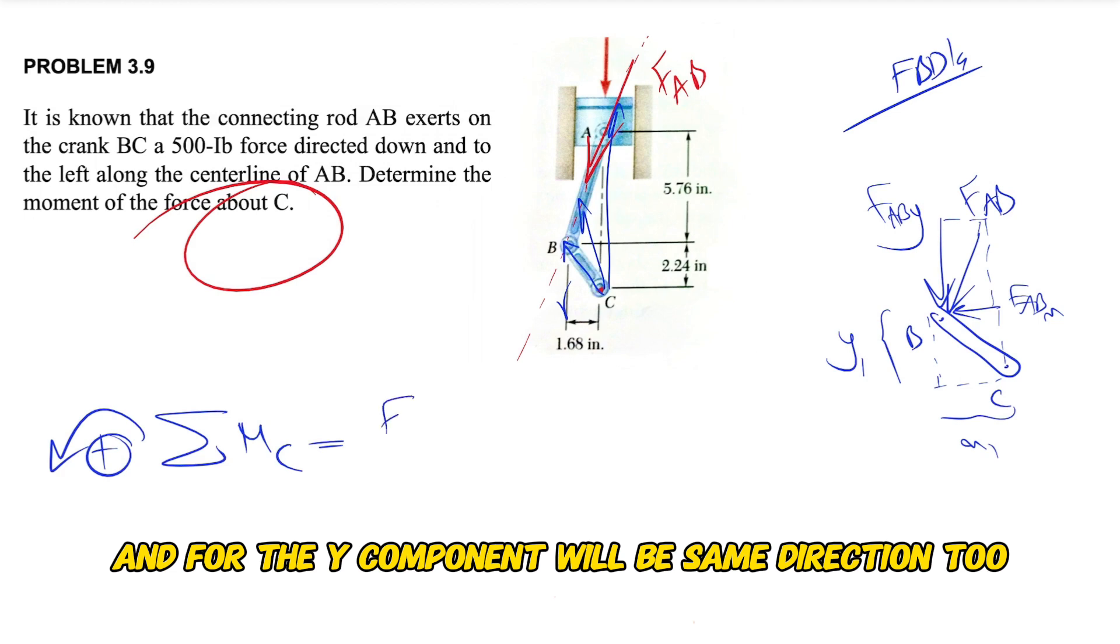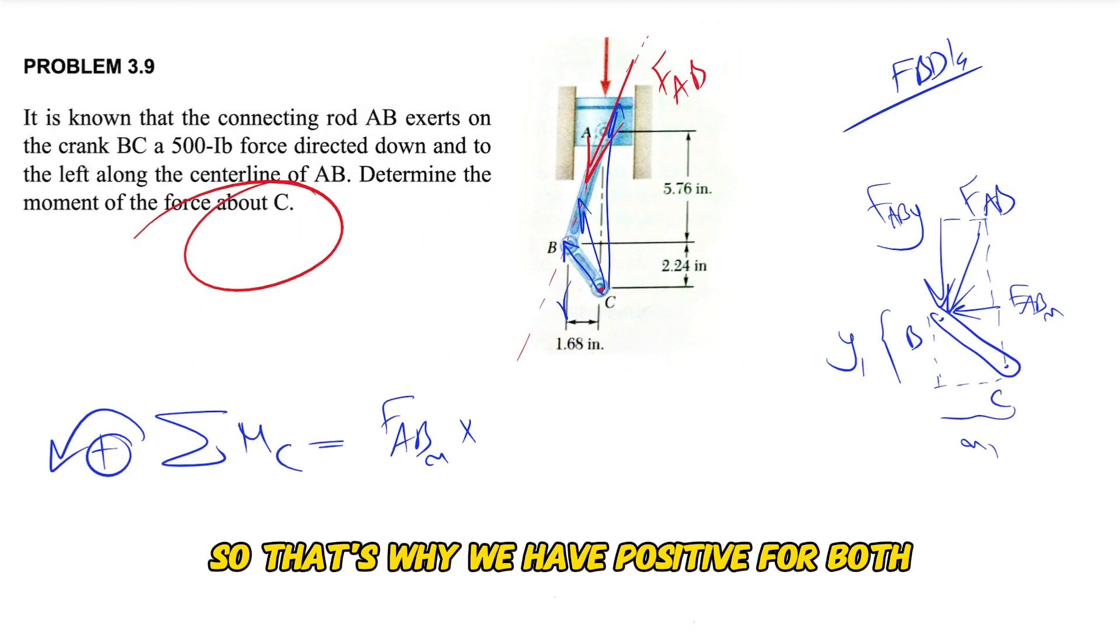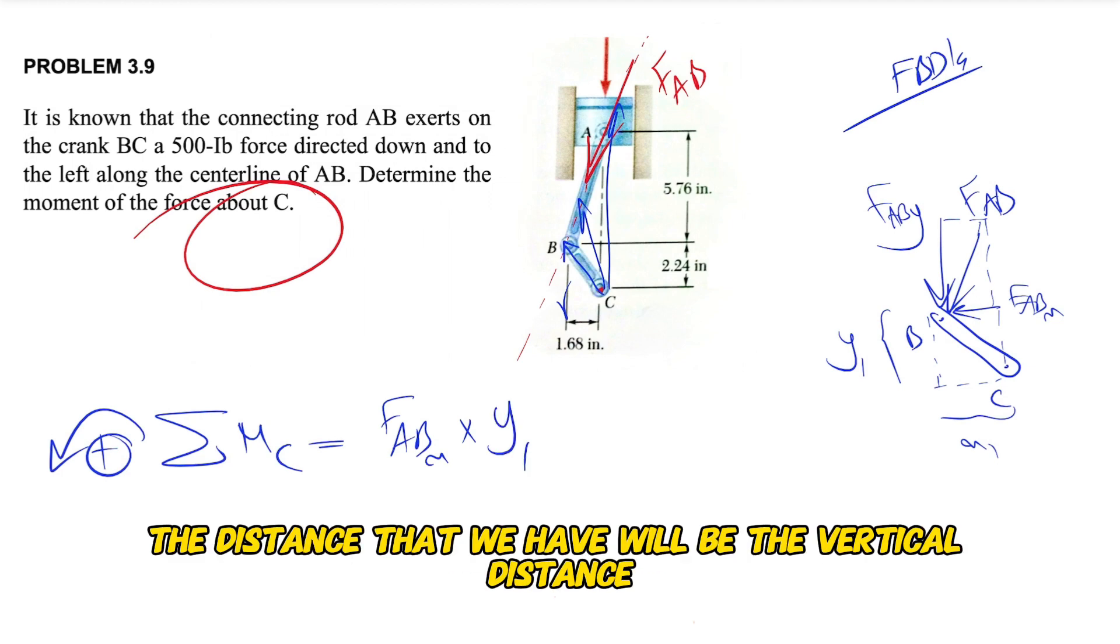So that's why we have positive for both. And that's what we have. So for FAB x component, the distance that we have will be the vertical distance, which is y1, and for the y component it will be x1.